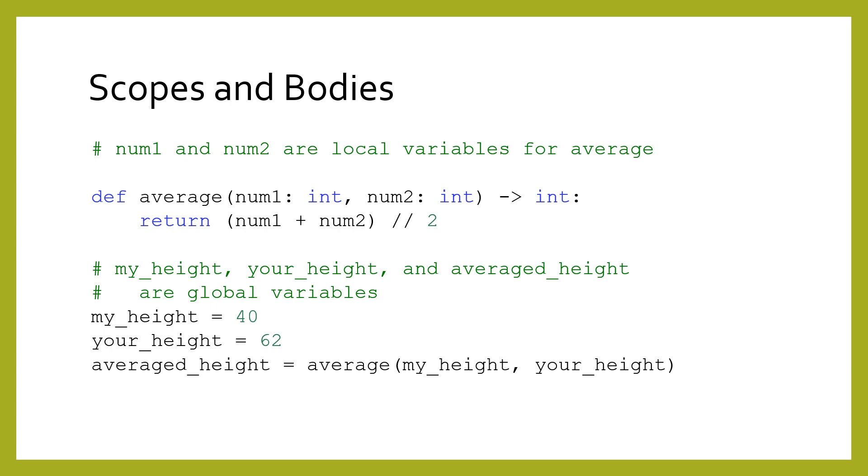The indented region under the header of a function is known as the body of the function. The body of the function is the same concept as the body of a module. In other words, every program has at least one body, and then every function also has its own body. A separate but related concept is the idea of scope, which is a body that controls the lifetime of variables.